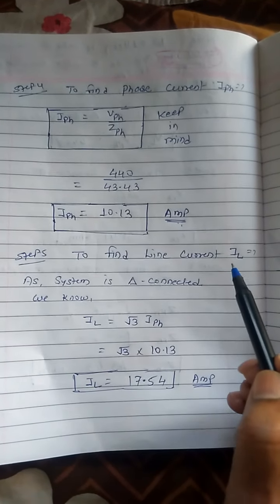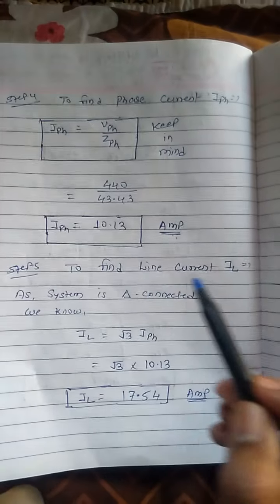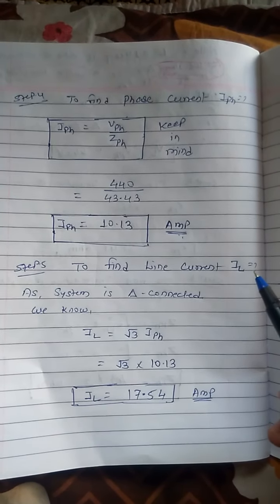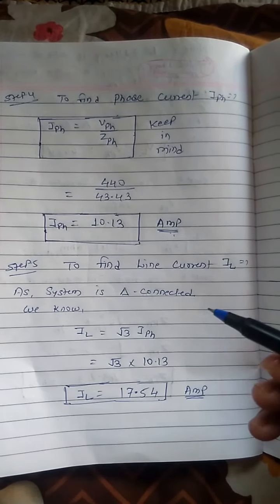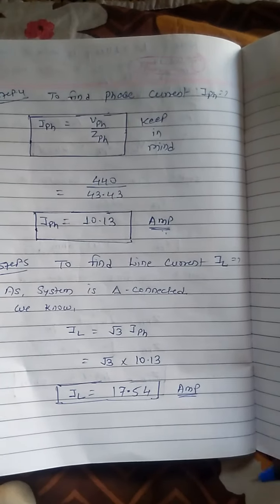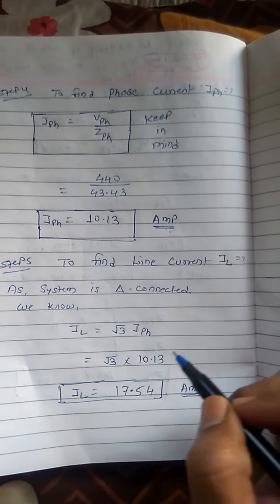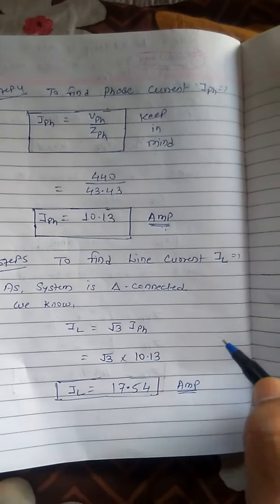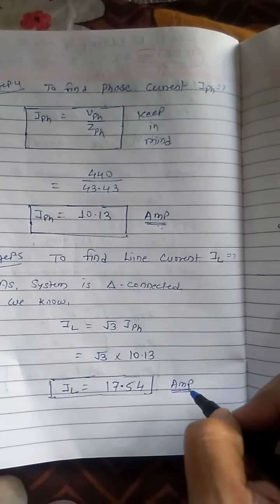Now we find the actual quantity we need. Step 5 is to find line current. In a delta connected system, line current = √3 × phase current. So IL = √3 × 10.13, giving us the line current value.